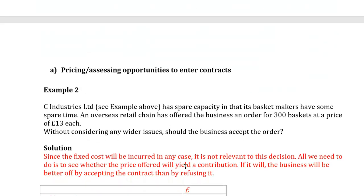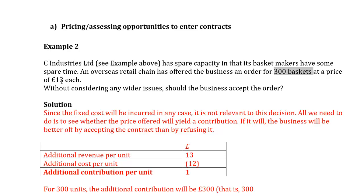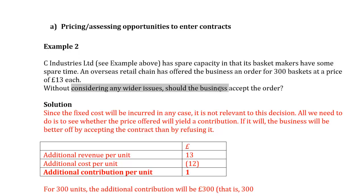Now let's start with the first decision: pricing and assessing opportunities to enter a contract. Remember our magic word — contribution margin. If it's positive, accept; if not, refuse. Continuing with the same example: the company has spare capacity, and an overseas retailer has offered the business an order for 300 baskets at a price of £13 each — instead of £14. Are you going to accept this offer?